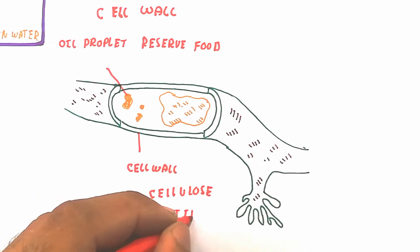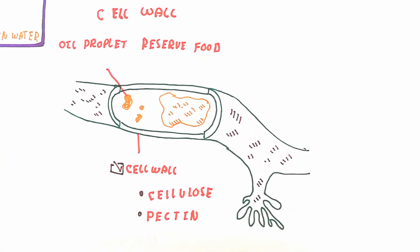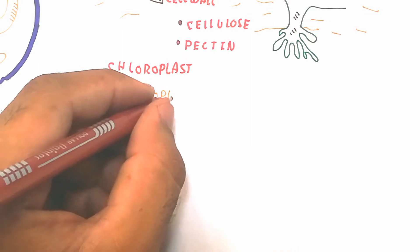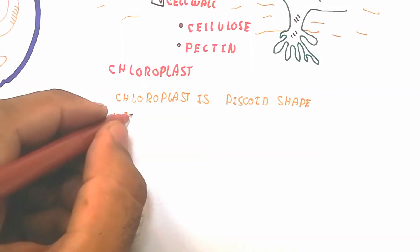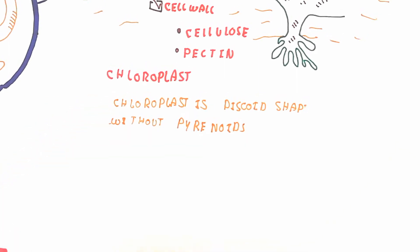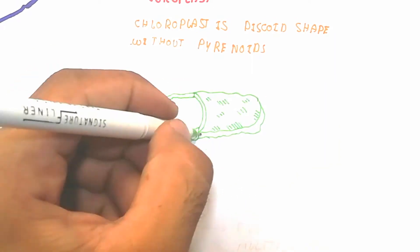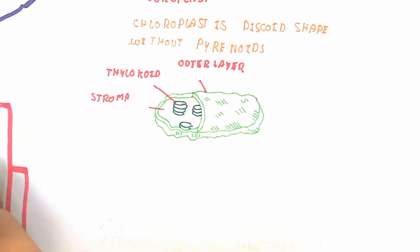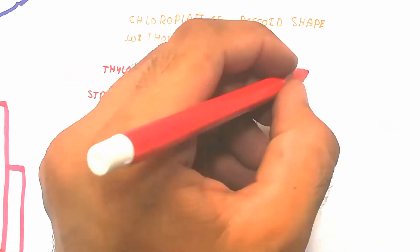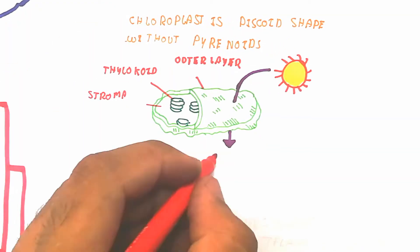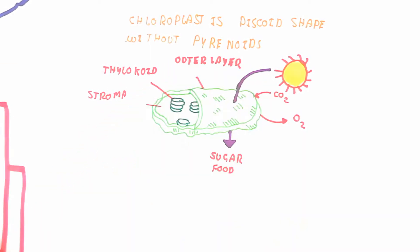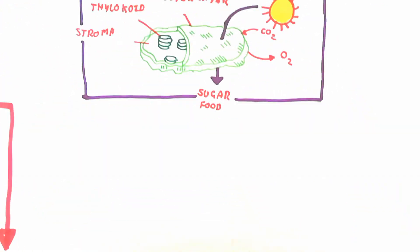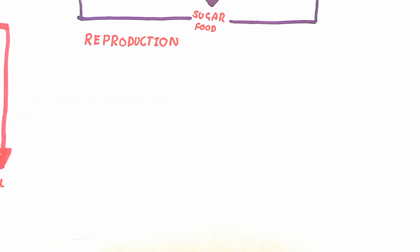The reserve food is oil droplets. The chloroplast is discoid in shape and without pyrenoids — meaning pyrenoids are not present. The chloroplast is used for photosynthesis: in the presence of light and carbon dioxide, oxygen is produced. Approximately 90% of oxygen is produced from algae, and sugar or other food is produced as reserve food. This is known as an autotrophic living style.